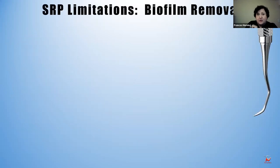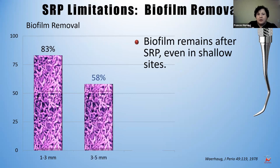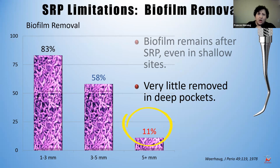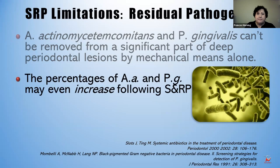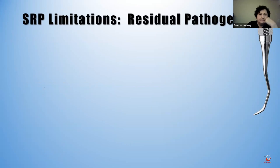How do we find the bad pathogens? By using salivary testing and the microscope. During a hygiene appointment in a 1 to 3 millimeter pocket, you're removing about 83% of the biofilm. In a 3 to 5 millimeter pocket, you're removing about 58% — still leaving 42% behind. Anything over 5 millimeters, you are removing only 11% of the biofilm, leaving 89% behind. So your patients on whom you're doing SRP with 5, 6, 7-millimeter pockets — you're leaving almost all of it behind. That's why they're not getting any better. Even PG and AA feed on blood, so if there's bleeding in the pocket, they'll only proliferate.